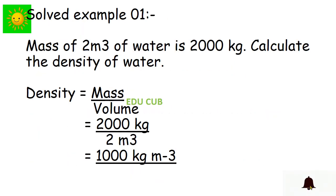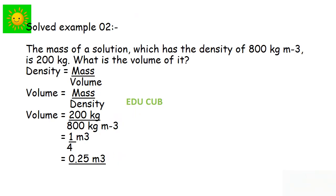There are some problems regarding density. The first one: the mass of two cubic meters of water is 2,000 kilograms — calculate the density of water using the density formula. The second one: the mass of a solution which has a density of 800 kilogram per cubic meter is 200 kilograms — what is the volume of it? Here you have to make volume the subject of the formula and then solve the problem.